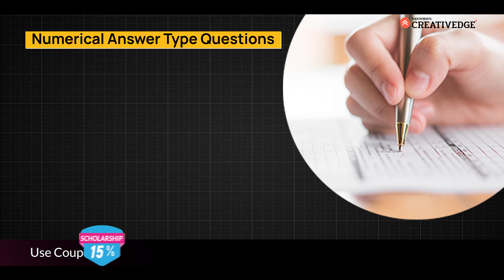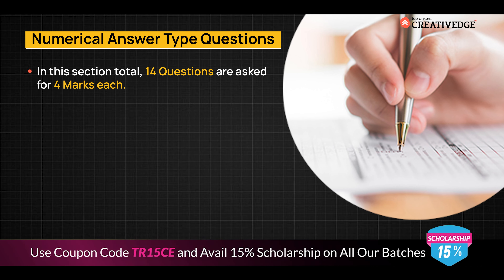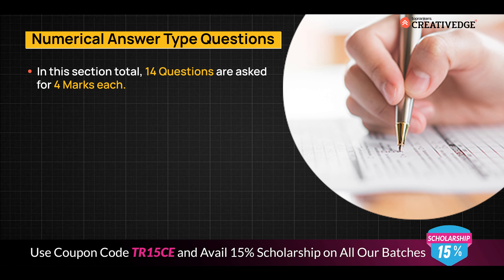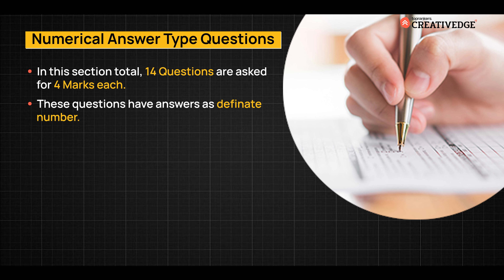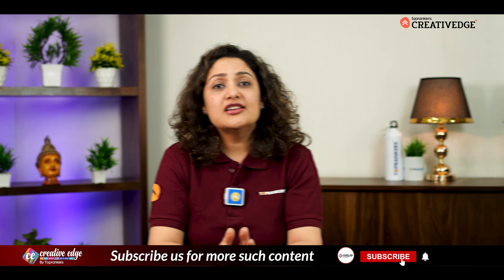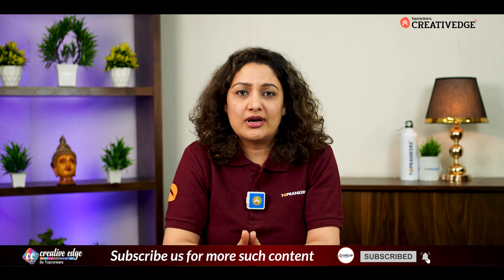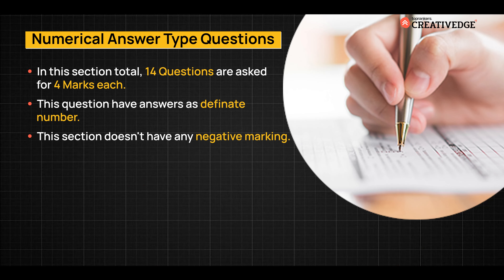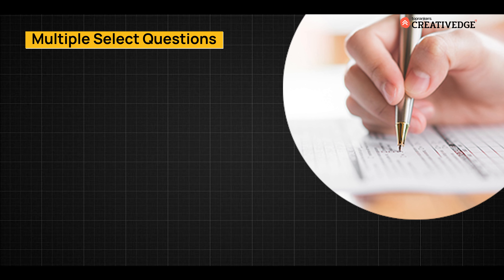Numerical Answer Type questions: in this section, a total of 14 questions are asked, each worth four marks. These questions have a definite number as the answer — that means no options are given. For example, the total number of states in India or the total number of corners of a cube will have a definite answer. This section does not have any negative marking.